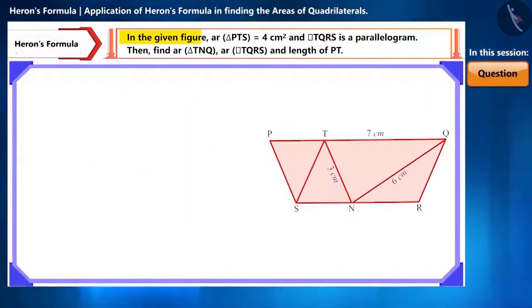In the figure, the area of triangle PTS is 4 cm² and quadrilateral TQRS is a parallelogram. On the basis of the given information, find the area of triangle TNQ, parallelogram TQRS, and the length of side PT.